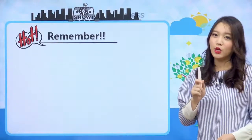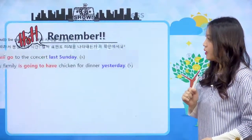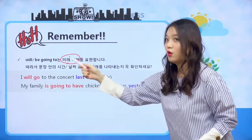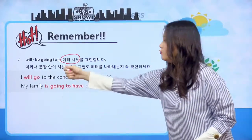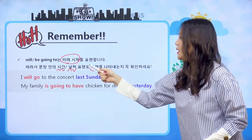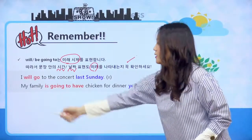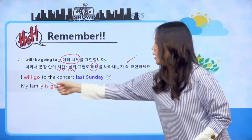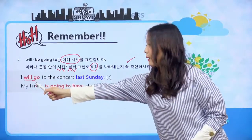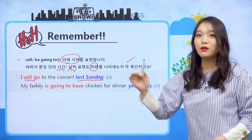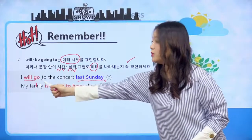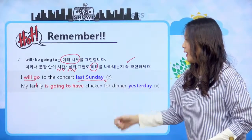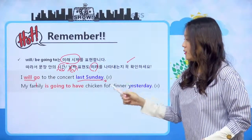정말 중요하게 기억해야 되는 것들이 있어요. will이나 be going to는 미래 시제를 표현하죠. 그래서 시험에서 문장 안에 시간이나 날짜 표현도 미래를 나타내는지 꼭 확인해야 돼요. 예를 들면 'I will go to the concert last Sunday' 하게 되면 틀린 문장이에요. will은 미래 시제를 나타내는 말인데 last Sunday는 지난 일요일, 즉 과거에 이미 지나간 일요일이에요. 그래서 둘이 같은 문장에 올 수 없는 거예요. next Sunday 하면 말이 되겠죠? last Sunday는 과거를 나타내는 말이기 때문에 문장 안에 있는 시간이나 날짜도 미래를 나타내는지 꼭 확인을 해야 되는 거예요.